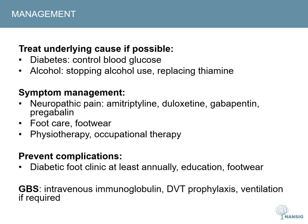In the case of GBS, there is a more specific treatment in the form of intravenous immunoglobulin. Other aspects of management are more supportive and include DVT prophylaxis, as these patients can be extremely weak and immobile, and ventilation may be required if the weakness begins to affect the respiratory muscles.